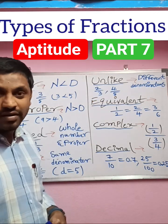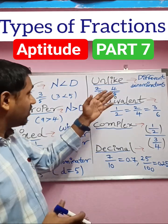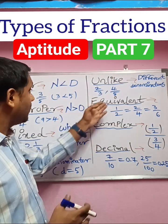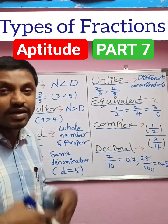Next, unlike fractions: fractions having different denominators. For example, 2 by 3, 4 by 5. They are called unlike fractions.